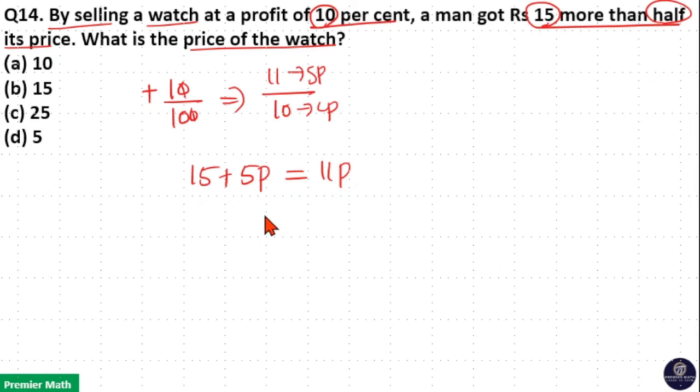That means here 6 parts is equal to 15. Then we need to find cost price, that is 10 parts. Then 10 parts is equal to 15 by 6 into 10, that is 150 by 6, which is equal to 25 rupees.